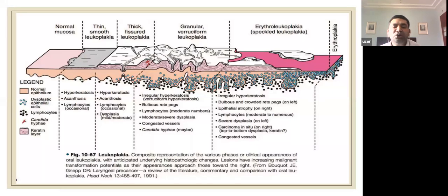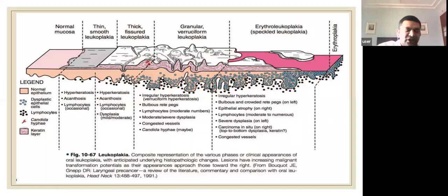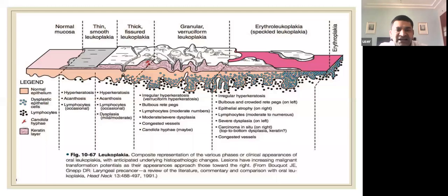Regarding progression to carcinoma: when the basement membrane — acting as a barrier — breaks down, epithelial cells penetrate deep into the connective tissue forming epithelial islands. These cells start producing keratin within the connective tissue. That is how leukoplakia progresses into carcinoma — epithelial islands in the connective tissue with keratin depositions mark the transition to squamous cell carcinoma.